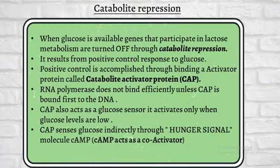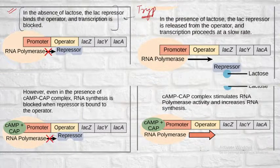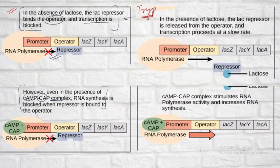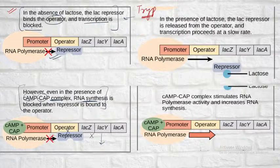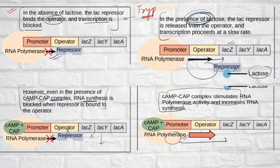If you remember the last class, we studied about catabolite suppression. In the absence of lactose, when the lac repressor binds to the operator, the transcription will be blocked. In addition, if the CAP-CAM complex was present and RNA synthesis occurred in its presence, the repressor binds to the operator and it won't be able to transcribe the genes. Then, in the presence of lactose, what happens? The lactose will remove the repressor, the RNA polymerase will be able to work properly, and the CAP-CAM complex will also be removed. The RNA polymerase will transcribe and the work will be continued.